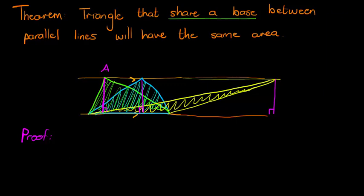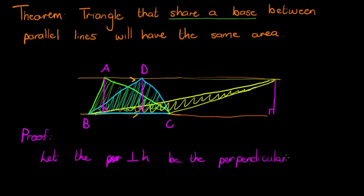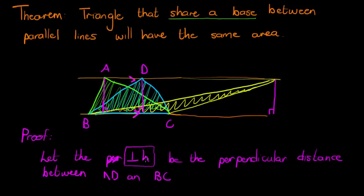If I have A, B, C, D, I'm going to start by saying let H be the perpendicular distance between line AD and BC. We know that AD and BC are parallel. We know from our previous theorem that the distance between this is everywhere the same. So I'm just going to say let that distance be a certain value. So I'm choosing this perpendicular H to be that distance.